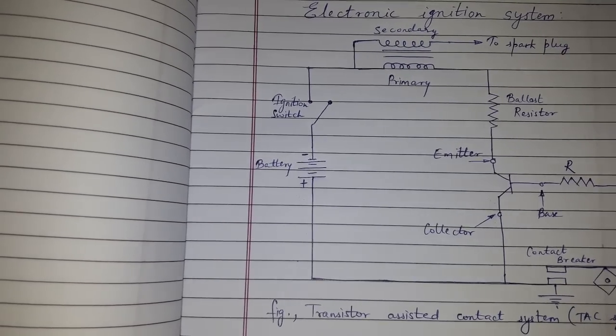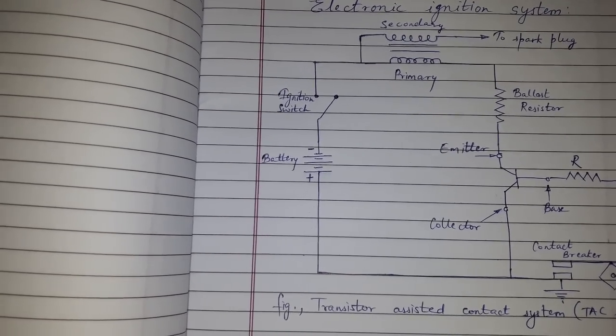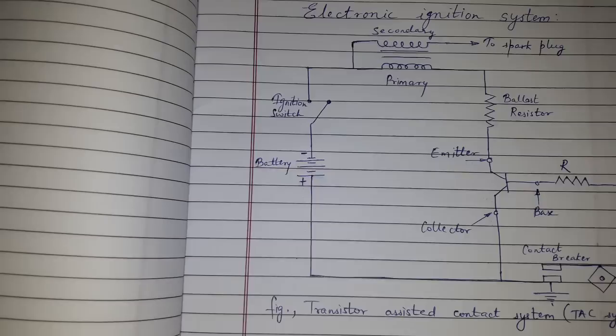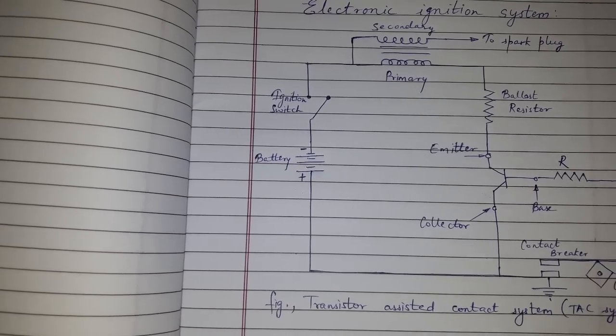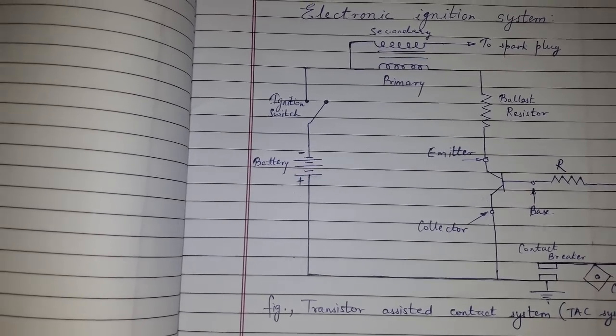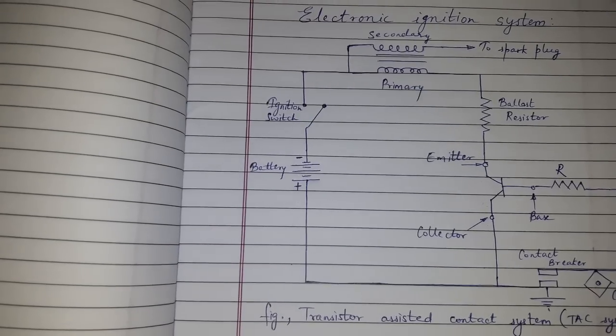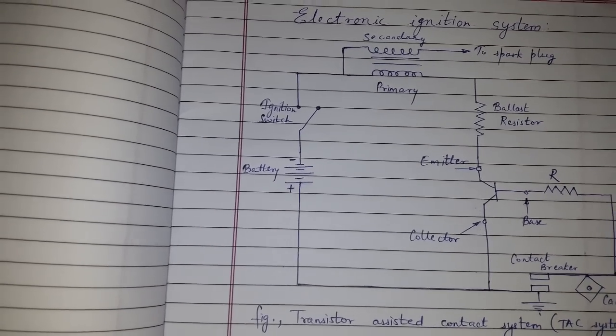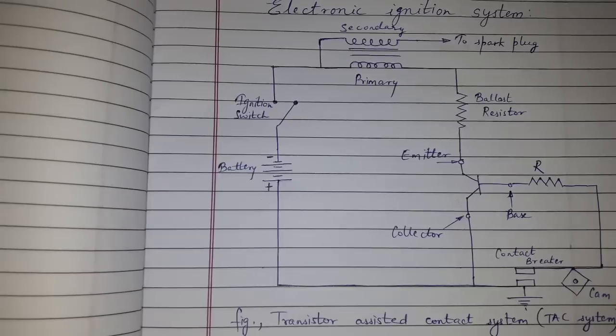Different electronic systems are transistor assisted contact system, that is TAC, and capacity discharge ignition system, that is CDI. Here we will be discussing transistor assisted contact system, that is TAC. First, let us see the construction or the arrangement.